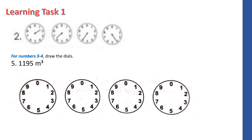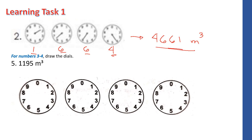Let us answer learning task 1 for water meters. The first dial is exactly on 4, so the reading is 4. The next dial is exactly on 6, so the reading is 6. The next dial is between 6 and 7, so the reading is still 6. The last dial is between 1 and 2, so the reading is 1. Since this is a water meter, reading from right to left, the answer is 4661 cubic meters.